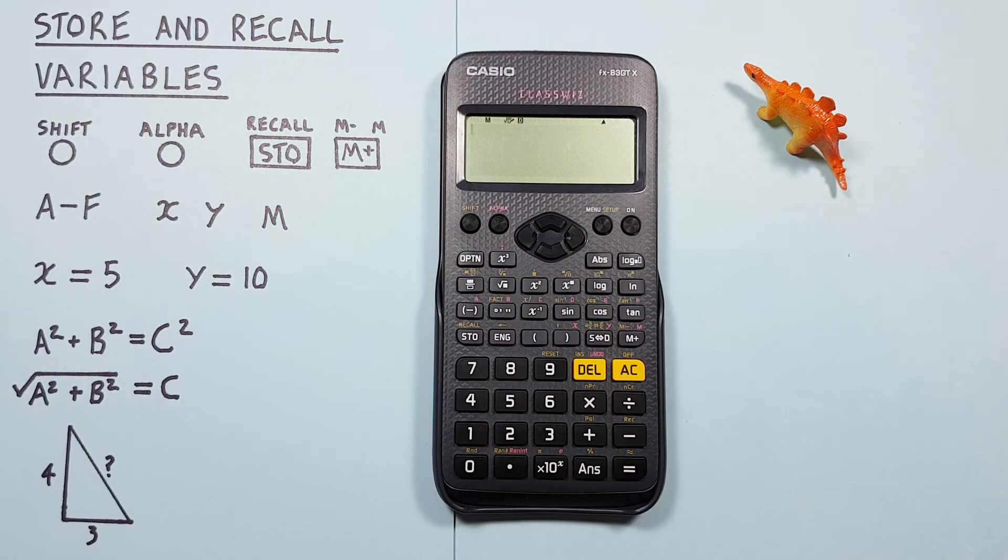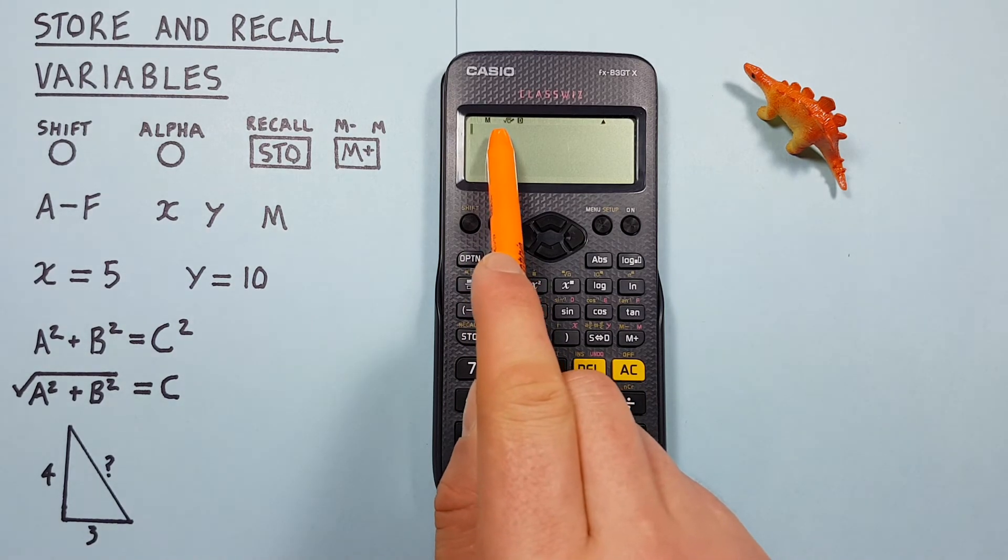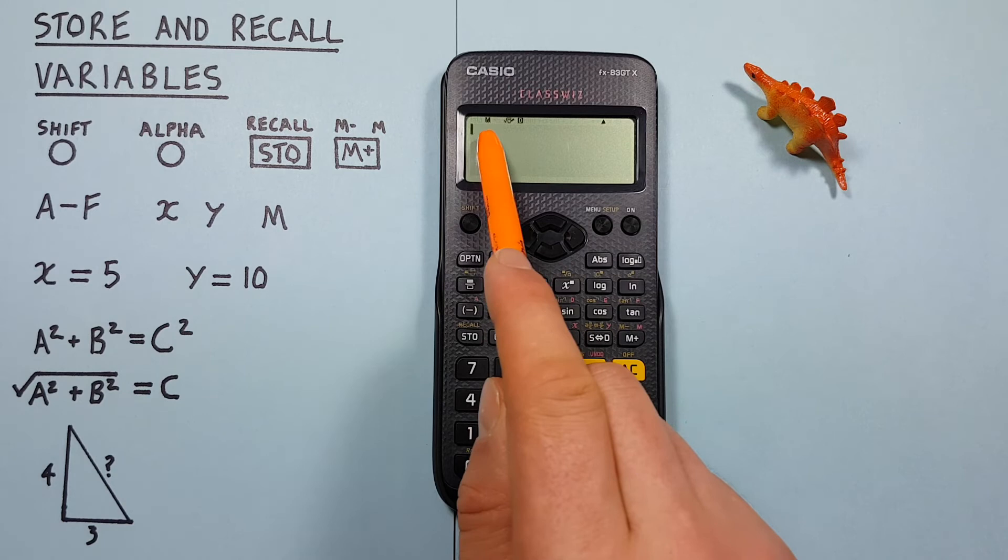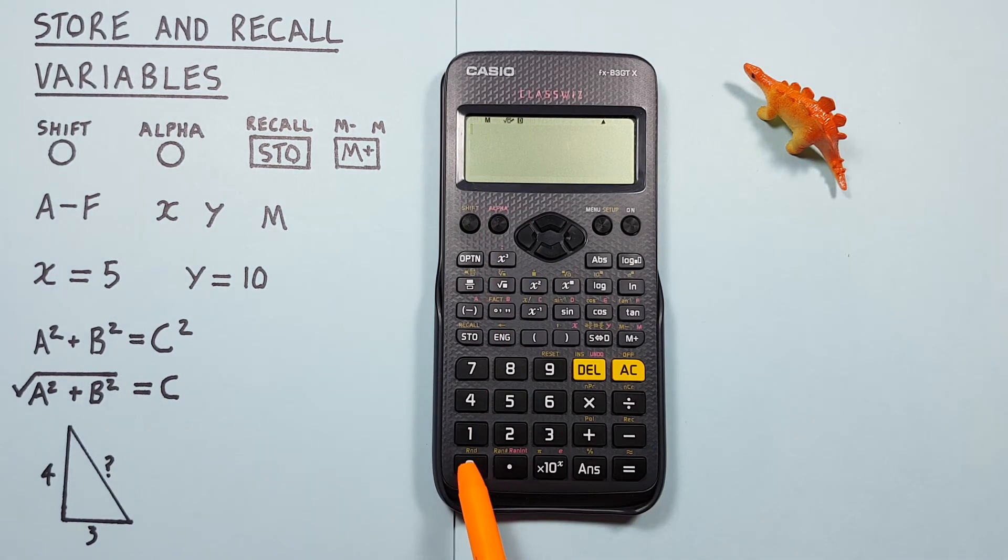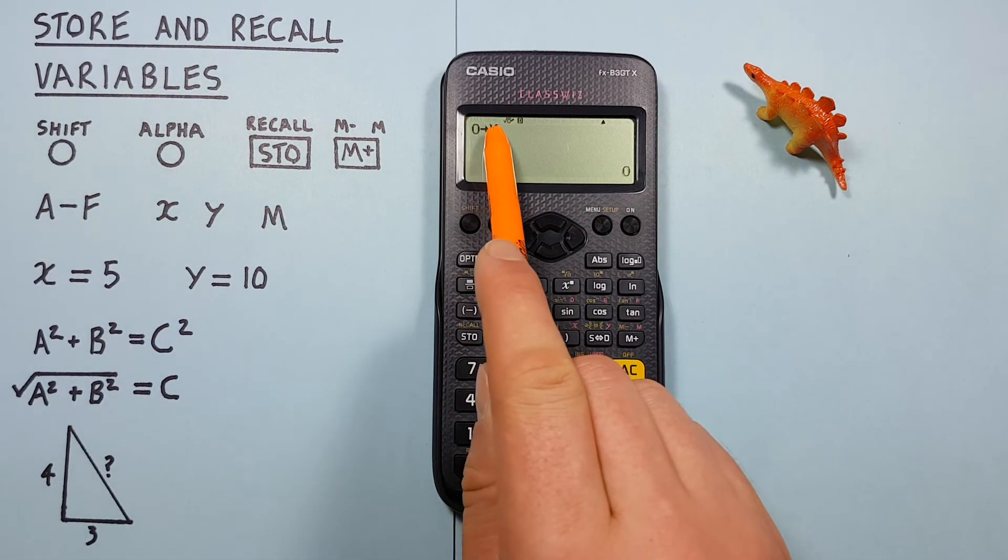You'll notice when we have something stored in our independent variable slot there's an M at the top of our screen. This just lets us know we have something saved there. If we want to get rid of that we can do so by saving 0 over our independent memory, so we can press 0 store M. The M at the top of our screen has now disappeared.